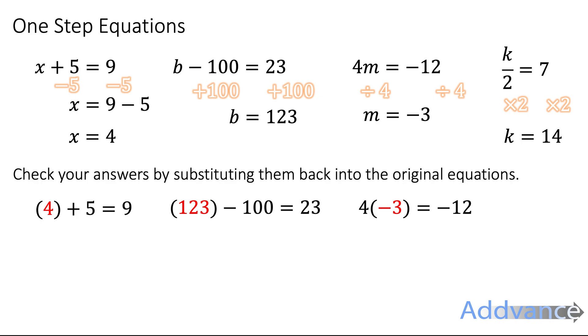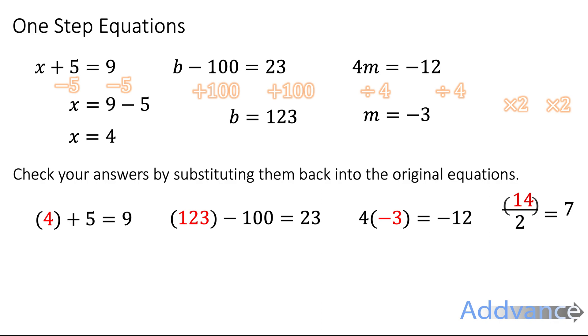Now I can put minus 3 into the equation. 4 times minus 3 equals minus 12. And 14 divided by 2 is 7. That all makes sense to me and it looks like I've got them correct.